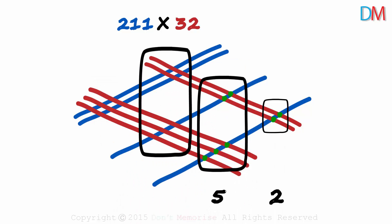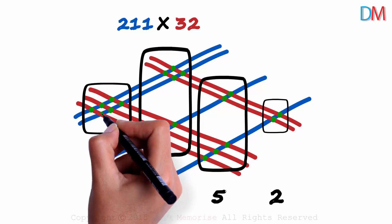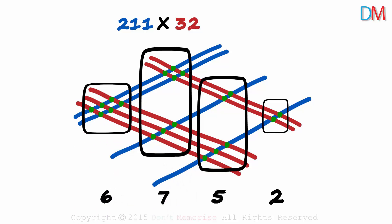This is the third zone. Four intersections at the top and three at the bottom. Seven in all. And this is the fourth zone which has six intersections. We write a six here and we are done.